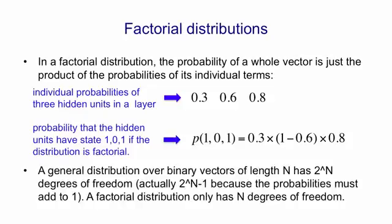In general, a distribution of binary vectors of length n will have 2 to the n degrees of freedom. Actually, it's only 2 to the n minus 1, because the probabilities must add to 1. A factorial distribution, by contrast, only has n degrees of freedom. It's a much simpler beast.